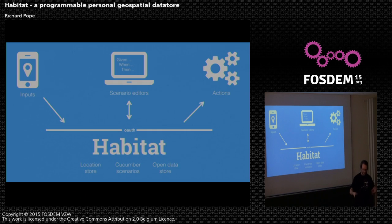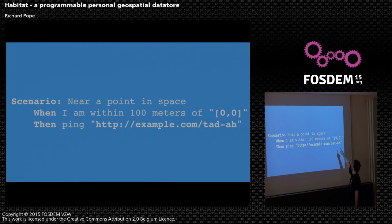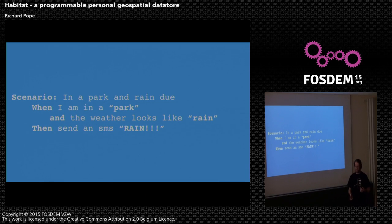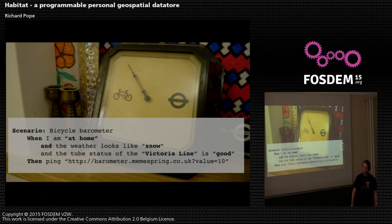The output might be: send an email, send an SMS, ping a URL. The cucumber tests look like this — the most basic example I have is 'when I'm within 100 metres of coordinate zero-zero, ping this URL.' That's about as far as I actually got, but where I'm heading is more complex things: linking up with OpenStreetMap data and saying 'when I'm in a park and it looks like the weather's going to rain, send me an SMS.' This is very similar to IFTTT or a self-crafted Google Now.